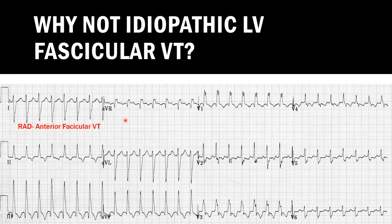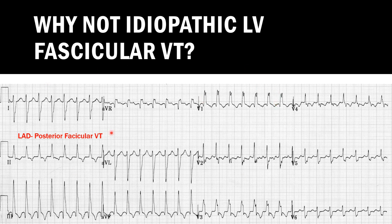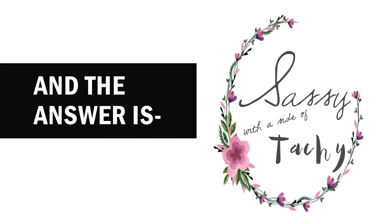If the tachycardia originates from the anterior fascicle, you see right bundle branch block morphology with right axis deviation — that is anterior fascicular VT. If from the posterior fascicle, you see right bundle branch block with left axis deviation — posterior fascicular VT. Since the EKG given does not have right bundle branch block morphology even though the QRS complexes are narrow, it is not idiopathic left ventricular fascicular VT. Therefore, the answer is sinus tachycardia. We will see you again next week.